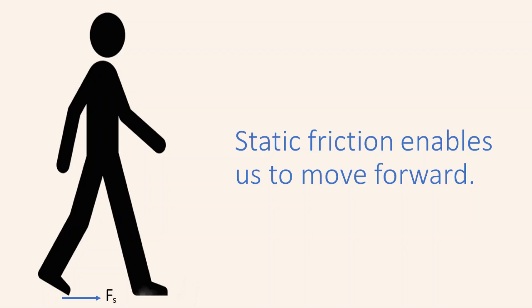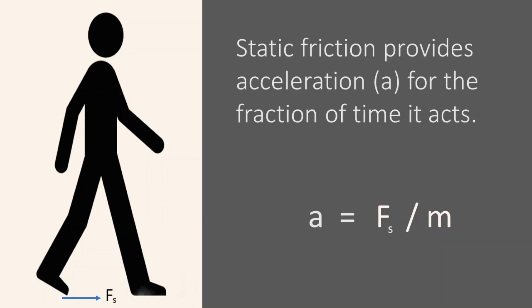When we begin to walk, we first try to push the ground backwards. This attempts to create relative motion between our sole and the ground. Friction reacts to this by opposing the relative motion, which is by pushing us forward, thus providing a force in the forward direction and enabling us to move forward.